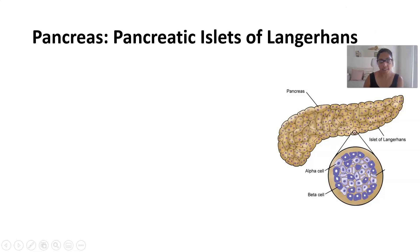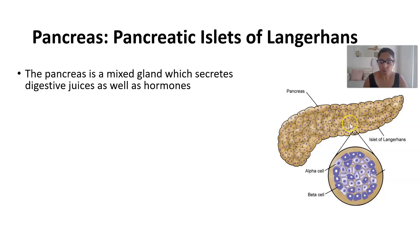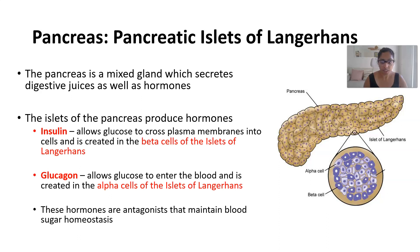The pancreas is this leaf-shaped organ found in the body as part of the digestive system. It's an exocrine organ and also an endocrine organ, which means that it secretes hormones. We know from year 11 that the pancreas secretes pancreatic enzymes, but in year 12 we're going to focus on the hormones. Within the pancreas itself, it has a collection of cells called the islets of Langerhans. The dark purple ones are the beta cells, and these secrete the hormone insulin.